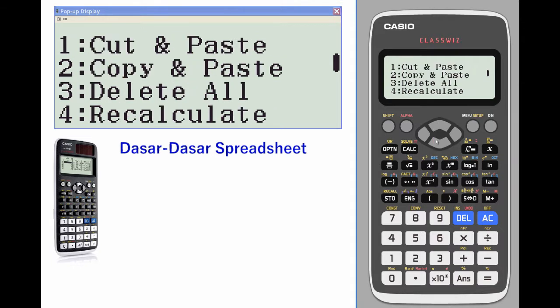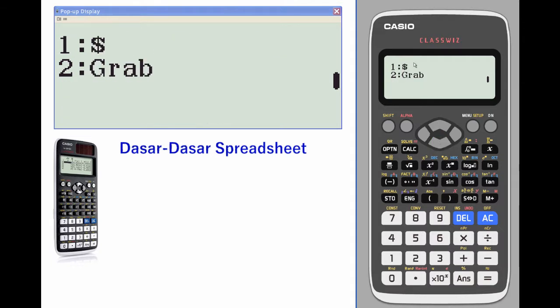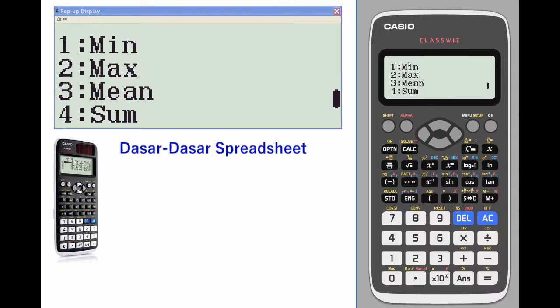Other options include edit a cell, figure out free space left, cut and paste, delete all, recalculate, the dollar sign which grabs a certain location and only that one, and grab value which grabs values from certain places.